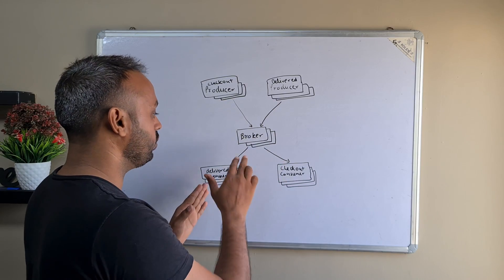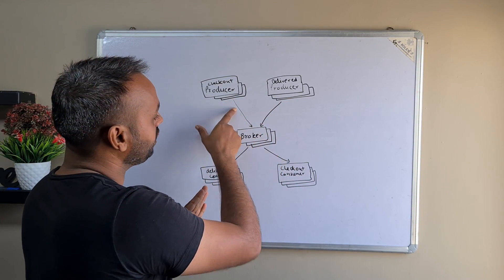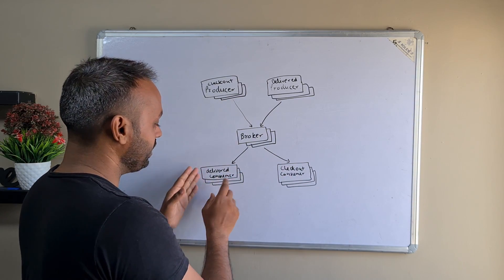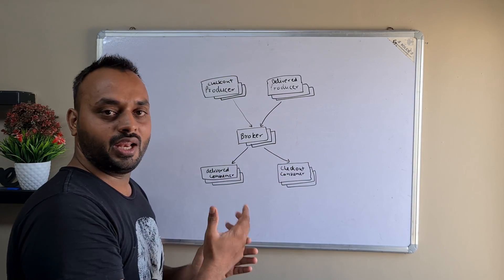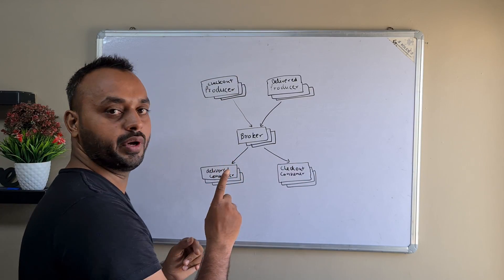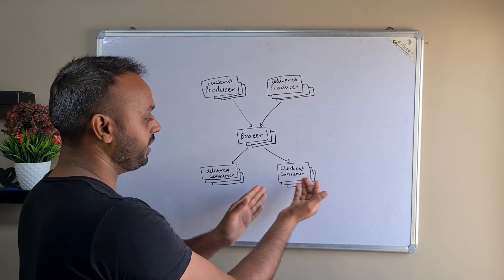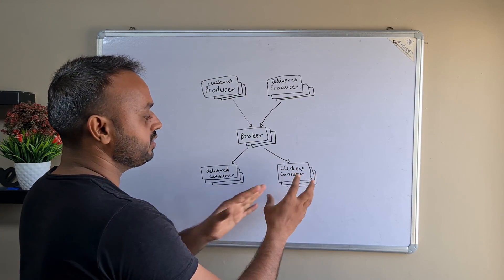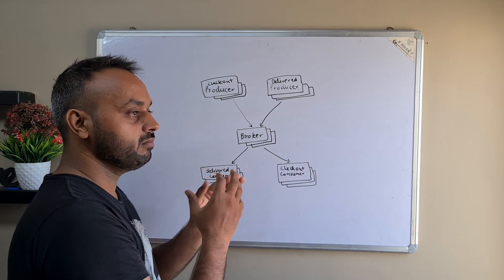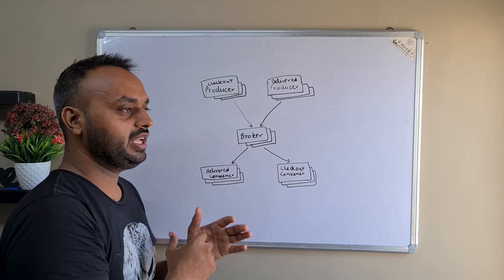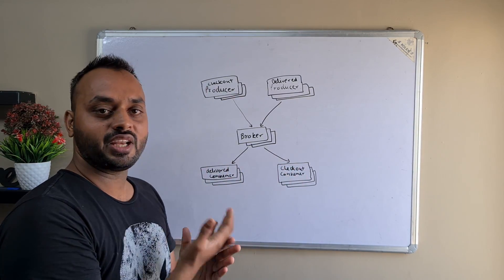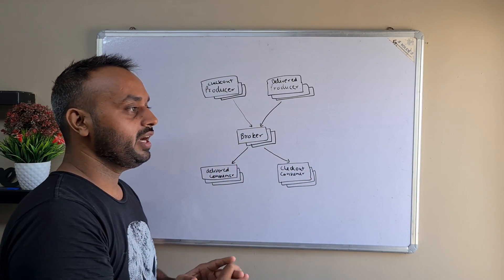Similarly, we have different consumers listening from the same topic. Each event goes to a different topic — checkout events go to the checkout topic, delivery events go to the delivery topic. Each consumer group has multiple consumers. This event gets delivered to the consumer group, and only one consumer in the group will get that event and process it. Kafka has very high throughput — you can publish even millions of messages to the broker. LinkedIn tested it at two million messages per second. Kafka was actually created by LinkedIn to analyze clickstream data and was later made an open source project, currently managed by Confluent.